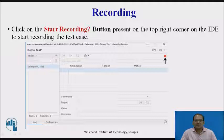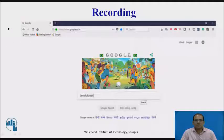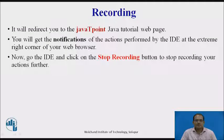The arrow mark indicates the start button. Once the start button is clicked, go to your Firefox browser and open the URL. The URL we have taken is google.com. It will redirect you to the Google search engine. In the Google search box, type 'Java tutorial'. In the screenshot, you can see the Google search engine box containing the text 'Java tutorial'. It will redirect you to the JavaTpoint Java tutorial web page. Meanwhile, you will get a notification of the actions being performed by the IDE at the extreme right corner of your web browser.